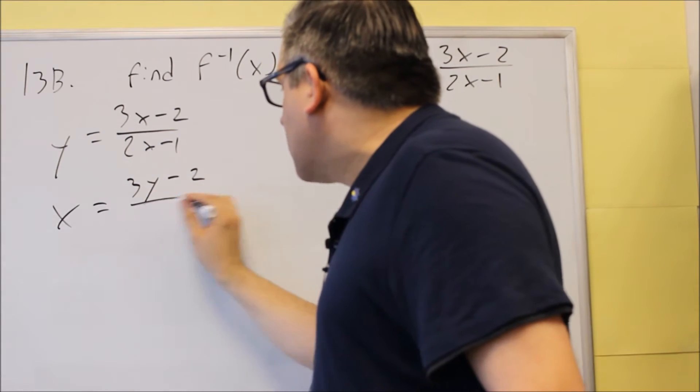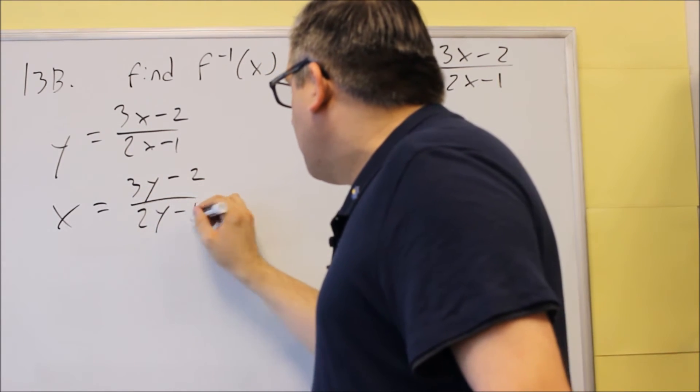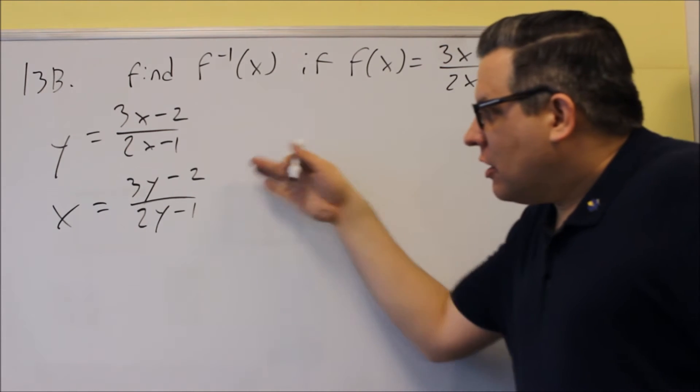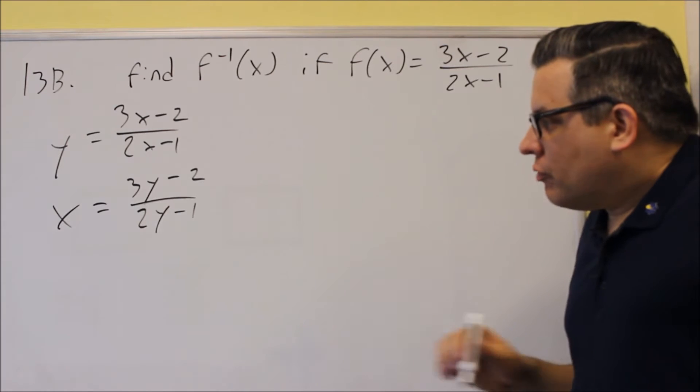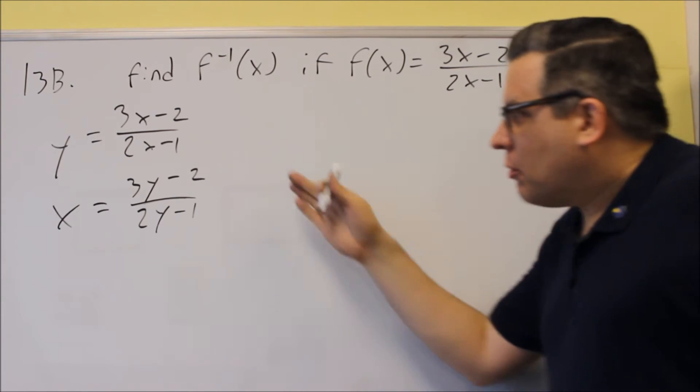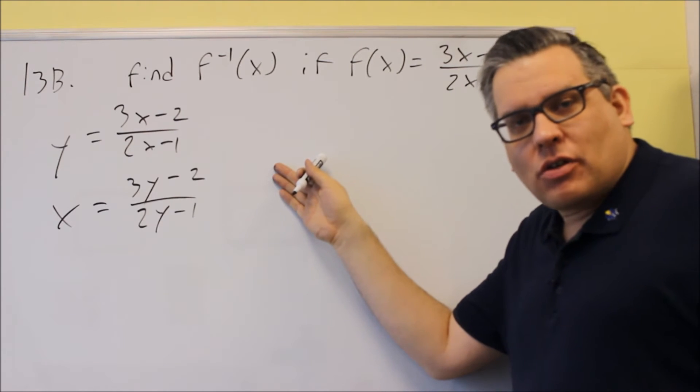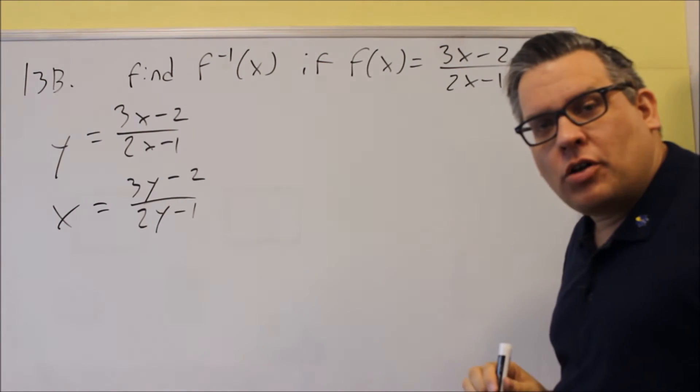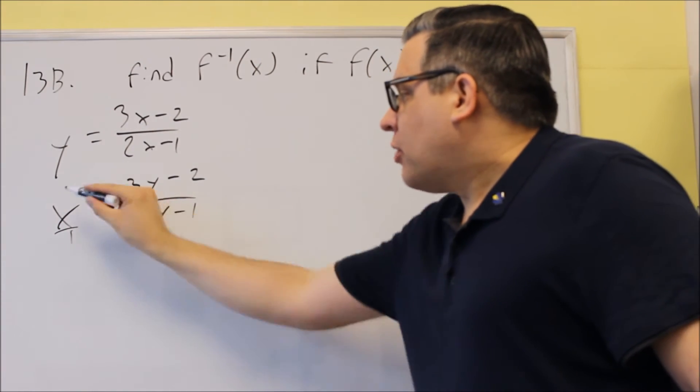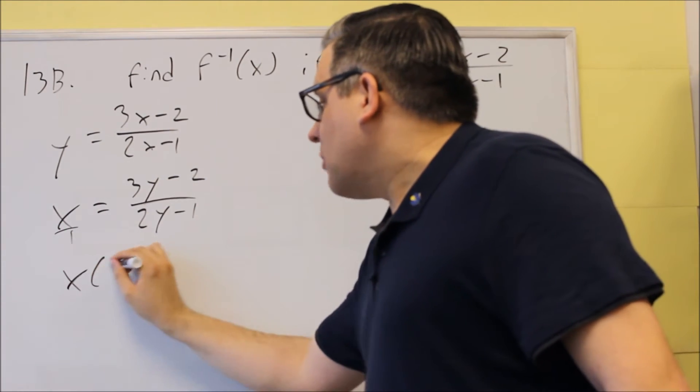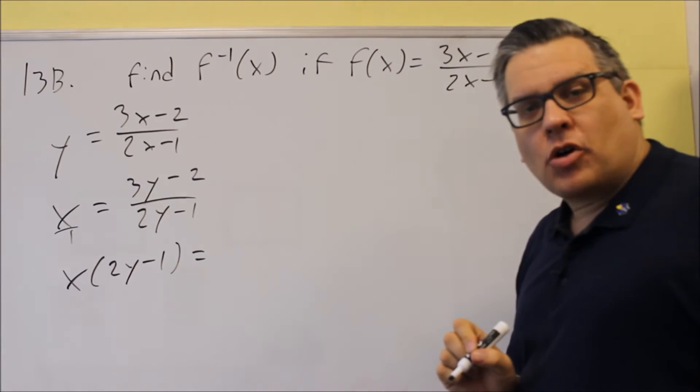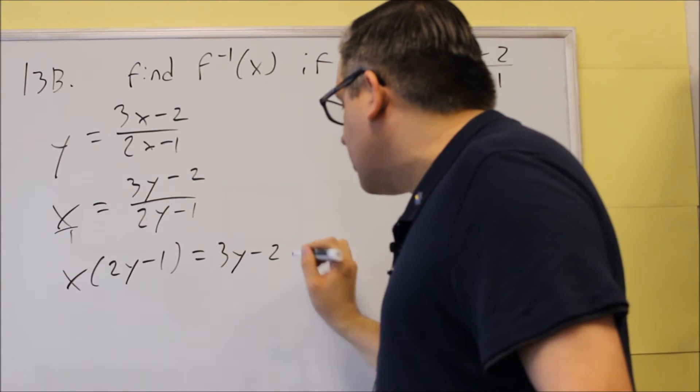So what will happen over here is now we're going to get two y's over there. Now the idea here is to solve for y. First what we need to do is get rid of the fraction. So we can either multiply both sides of the equation by 2y minus 1, or we can also cross multiply. If you cross multiply, you multiply this diagonal together, so x times 2y minus 1, and that's going to equal the other diagonals multiplied together, 3y minus 2.